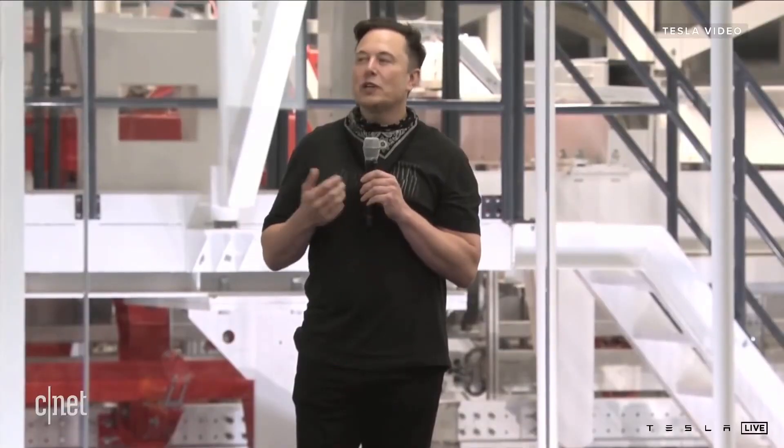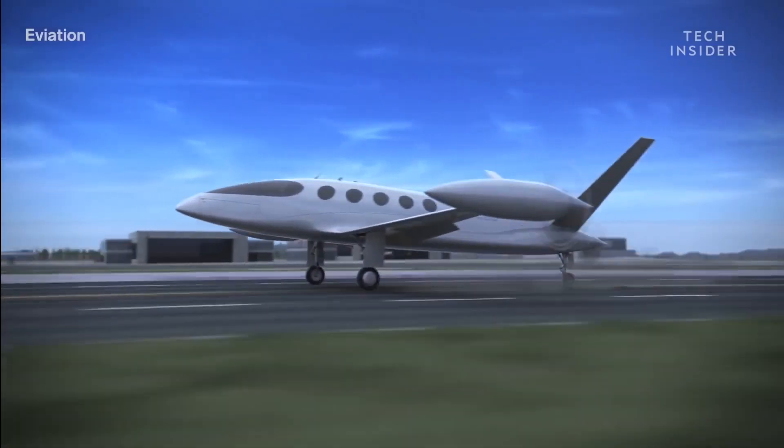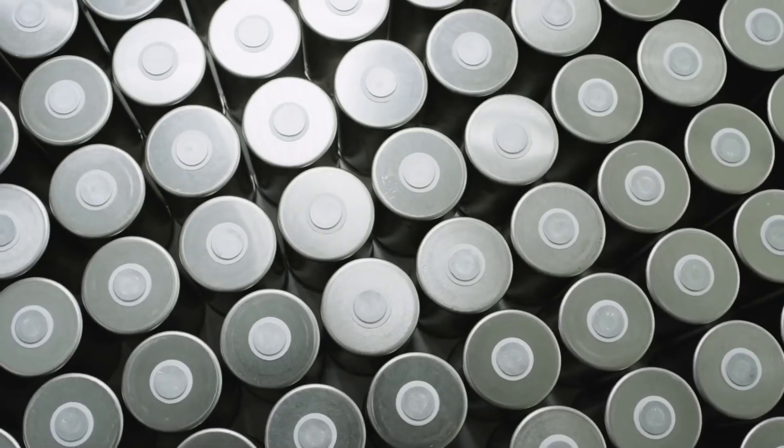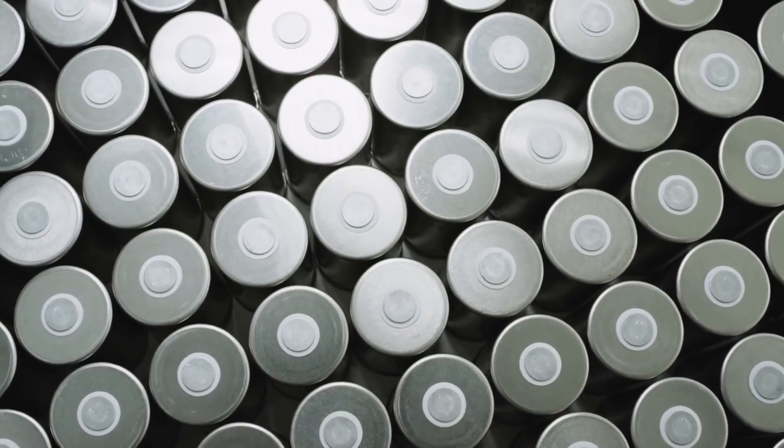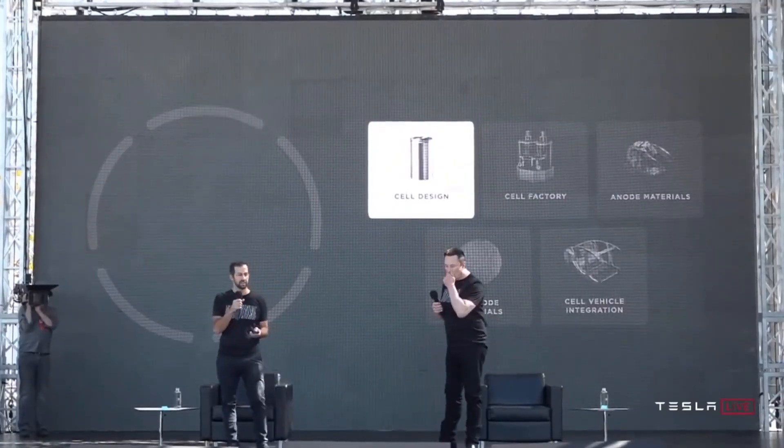Musk has previously stated that he wants to build an electric plane to replace his present private jet. To accomplish so, however, a lighter battery with a high energy density is required. This will allow the plane to be as light as feasible while maintaining a lengthy range of flight. It's tough to obtain a battery that satisfies the specific needs of airplanes in today's market.